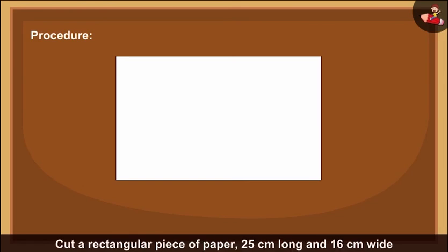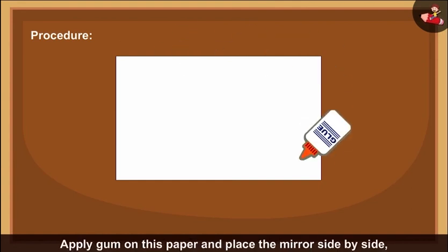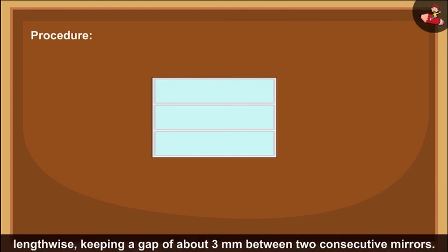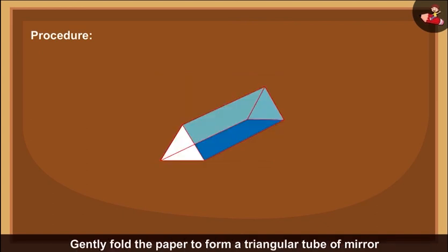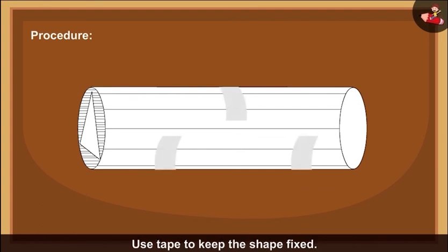Procedure: Cut a rectangular piece of paper 25 cm long and 16 cm wide from a white chart paper. Apply gum on this paper and place the mirror side by side lengthwise, keeping a gap of about 3 mm between two consecutive mirrors. Gently fold the paper to form a triangular tube of mirror with the reflecting surfaces facing each other. Use the tape to keep the shape fixed.